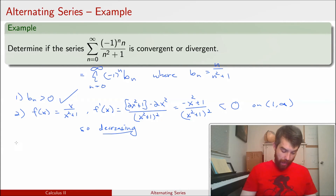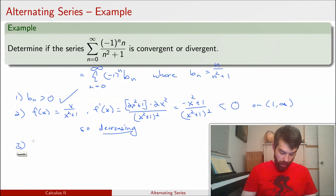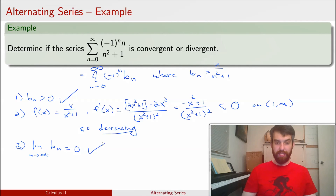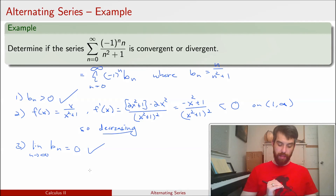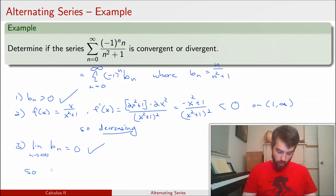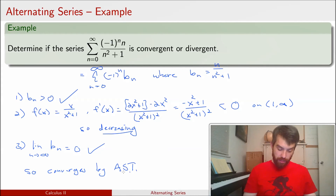Third property to check: I need the limit as n → ∞ of b_n to equal 0. Indeed this is the case — I have just n on top and n² + 1 on the bottom. This is a rational function, and such functions go to 0 when the denominator has a higher degree than the numerator. So all three conditions of the alternating series test are satisfied, and the series converges by the AST, or alternating series test.